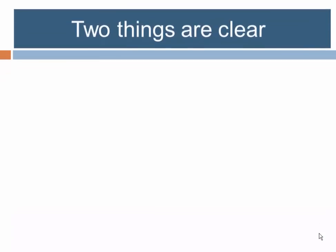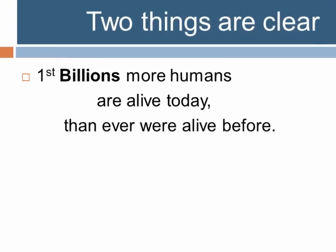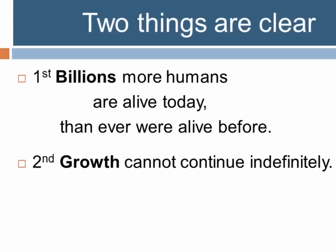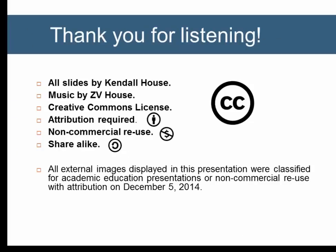A couple of things are clear from examining this. First, billions more humans are alive today than ever were alive in the past, meaning our social systems and settlement patterns are quite different. Second, growth cannot continue indefinitely — and indeed it looks like it won't, for reasons we'll examine in the next presentation.